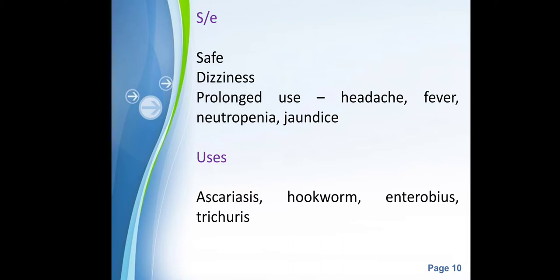Side effects of albendazole include, after prolonged use, headache, fever, neutropenia, and jaundice, but it is mostly safe. It is used for ascariasis, hookworm, Enterobius, Trichuris, and many other conditions. For most of these, the required dose is 400 mg single dose for adults and children above 2 years. Children less than 2 years of age receive 200 mg.